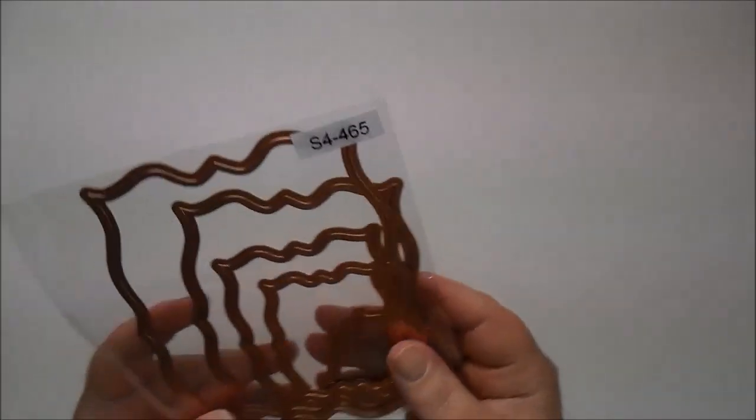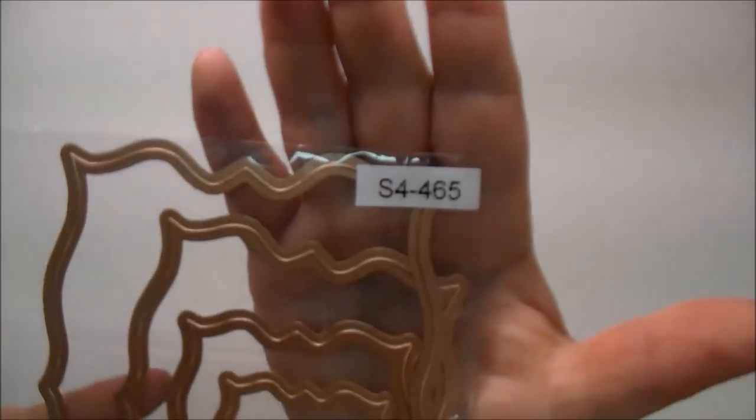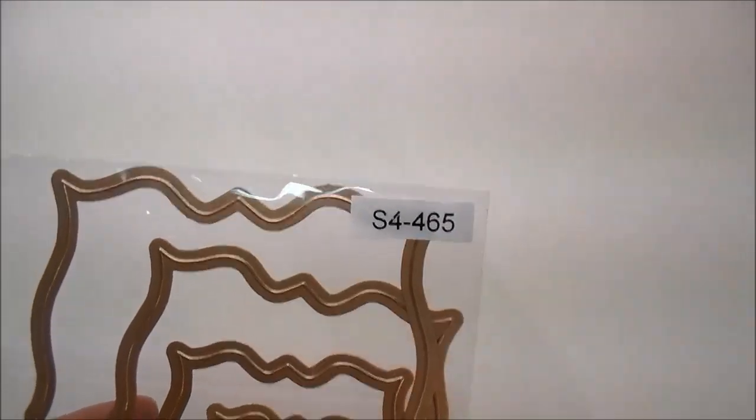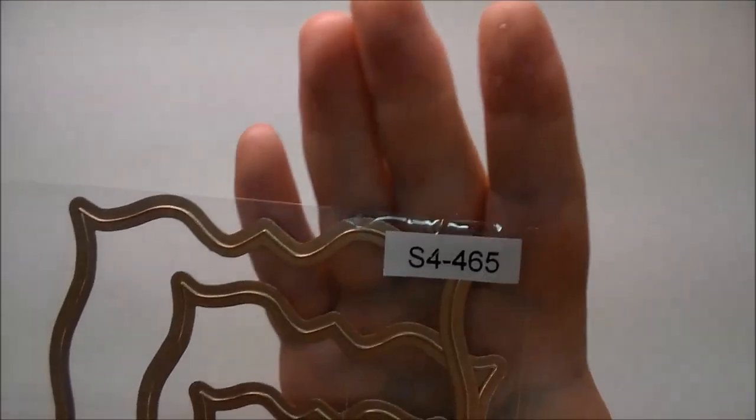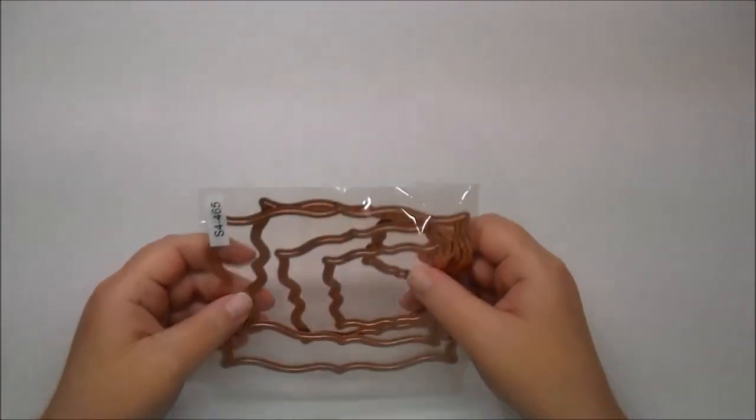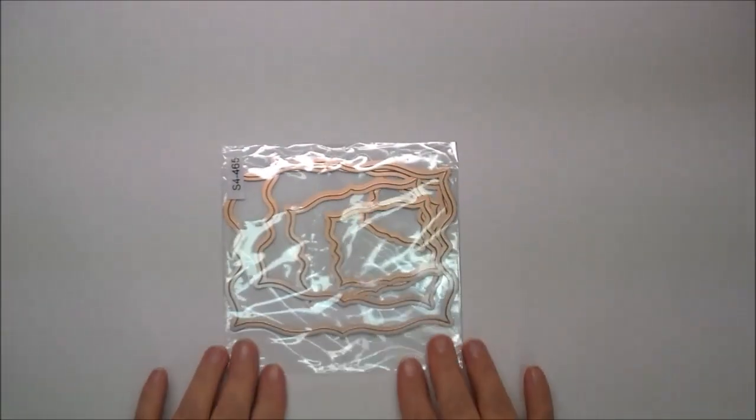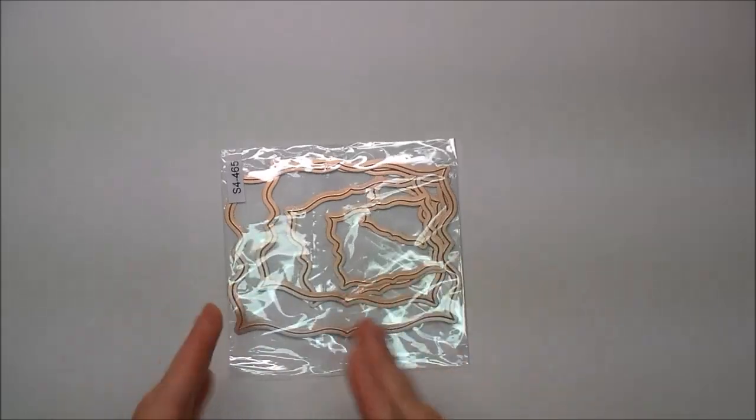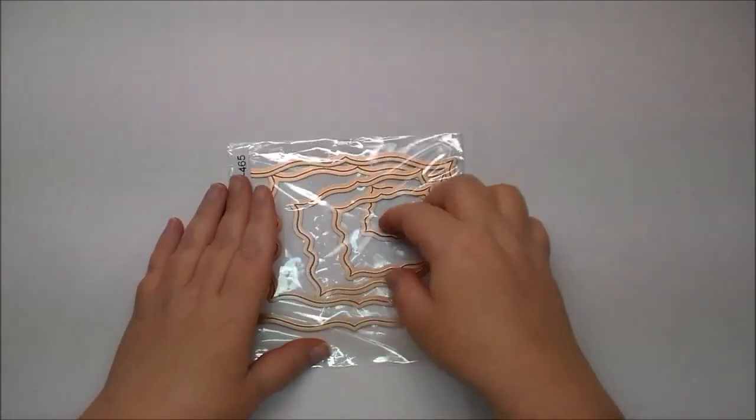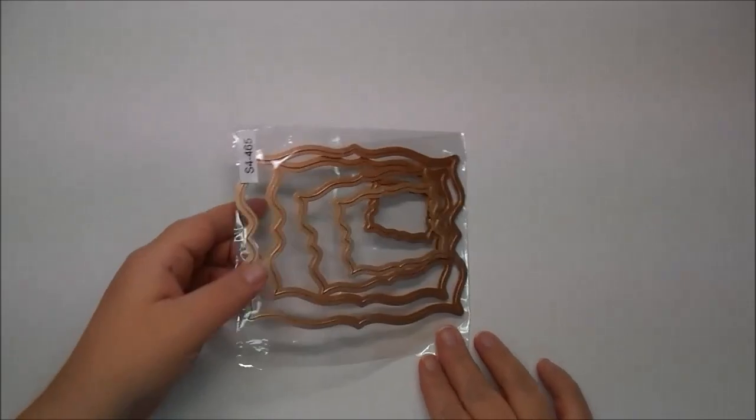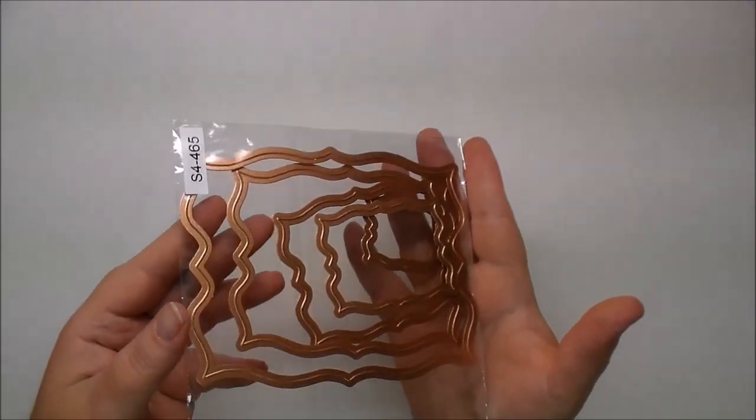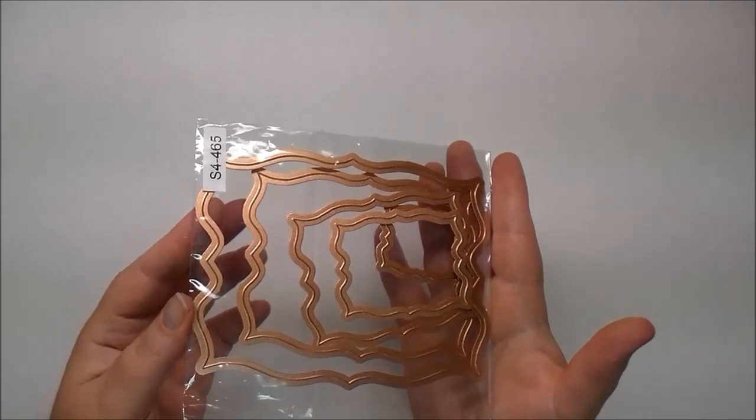The next one is Labels 40 dies and you get five dies in this. This one is S4465 and look at these. These are so cute. So they have different sizes, five different sizes. Let me turn it like this so you can see it better. Sorry for the glare. That's the Labels 40 dies.